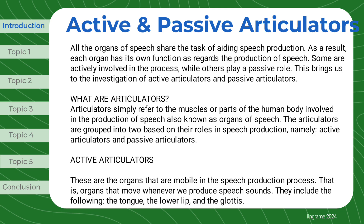All the organs of speech share the task of aiding speech production. As a result, each organ has its own function as regards the production of speech. Some are actively involved in the process, while others play a passive role. This brings us to the investigation of active articulators and passive articulators. Articulators simply refer to the muscles or parts of the human body involved in the production of speech, also known as organs of speech. The articulators are grouped into two based on their roles in speech production, namely active articulators and passive articulators.